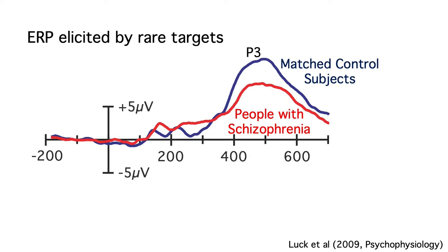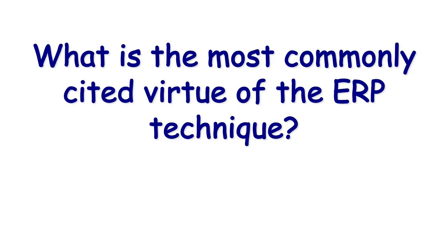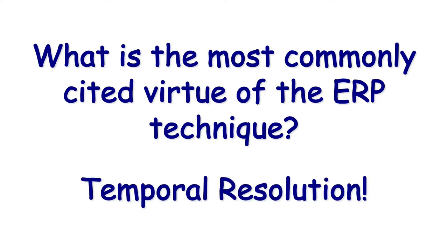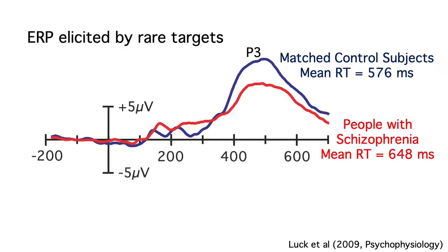To answer this question, let's consider another question. What's the most commonly cited virtue of the ERP technique, especially when people are comparing ERPs with fMRI? It's the millisecond temporal resolution. But behavioral response times are also measured with millisecond temporal resolution. The mean RTs in this experiment were about 70 milliseconds slower in the schizophrenia group than in the control group — that's millisecond-level temporal resolution. So how is the temporal resolution of the ERP technique any different from the temporal resolution of response time?